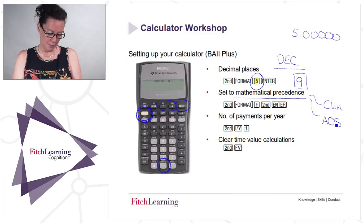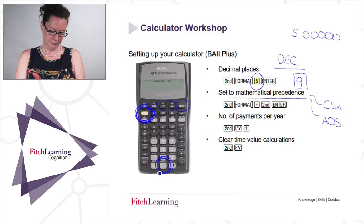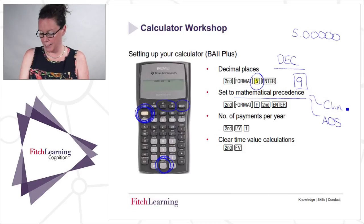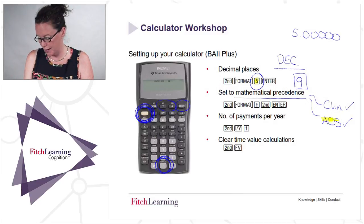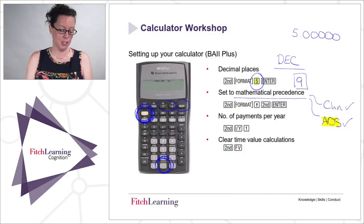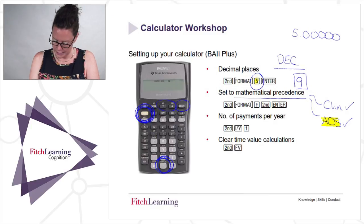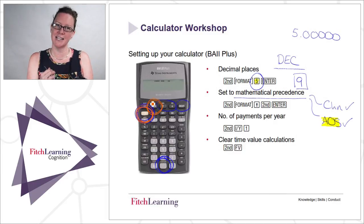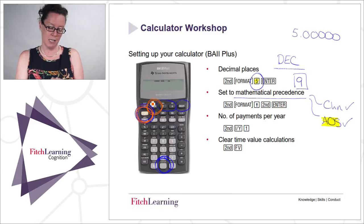Go into format — second decimal point — and if you scroll through, you will come to either CHN, which is chain mode, or AOS, algebraic operating system. The one you want is algebraic operating system. If you're in chain mode, scroll to CHN and switch between systems using the second button then the enter button. Above enter it says 'set,' so second then enter will change the setting. If you keep doing second enter, you flick back and forth between them. The one you want is algebraic operating system.